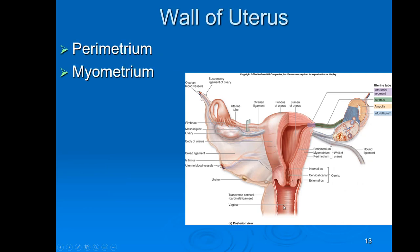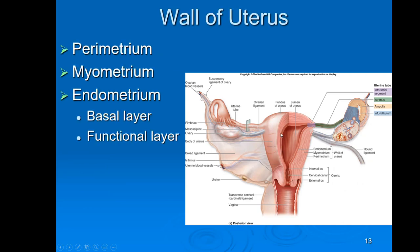Looking at the wall of the uterus, going from outside to inside: the perimetrium is on the outside, the myometrium is the smooth muscle layer that allows contraction, and the inner lining is the endometrium. The endometrium has two sub-layers: the functional layer on the inside, and the basal layer just deep to that. The functional layer is called functional because it's the part that comes off during menstruation.